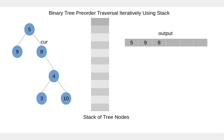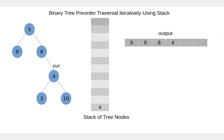We add 8 to the stack and then move to its left child. The left child is null, so current gets the value of 8 — we pop the node — and then move to the right child. Node 4 is not null, so we process 4, add 4 to the stack, and then move to its left child.